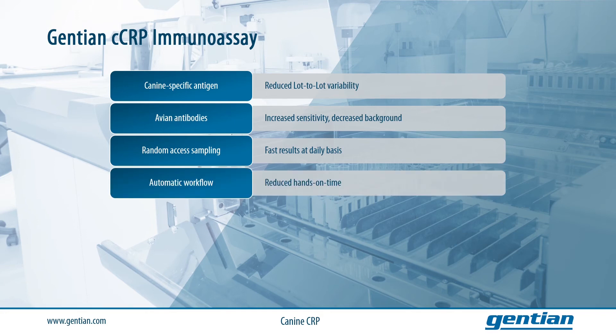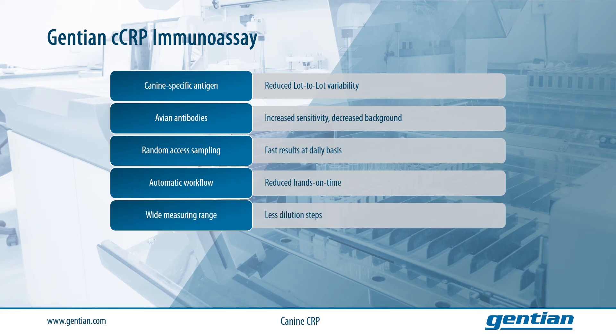The Gentian assays are fully automated systems, meaning less hands-on time in the lab, which saves time and money. The assay time is quite short — from start to result it only takes 10 minutes. The assay also provides a wide measuring range, which means fewer dilution steps are needed for most samples, saving time, costs, and possible inaccuracies in dilution.